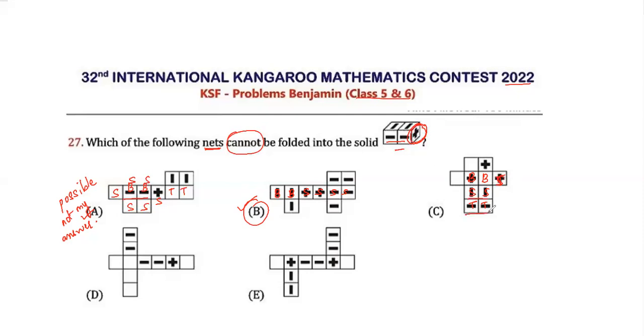So these two are the side and these two are the side, like the top and the side and one more side. So C is possible, hence not my answer.